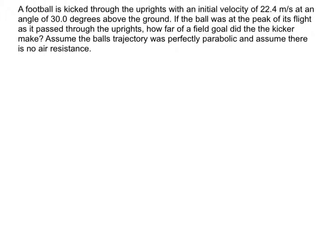A football is kicked through the uprights with an initial velocity of 22.4 meters per second at an angle of 30 degrees above the ground. If the ball was at the peak of its flight as it passed through the uprights, how far of a field goal did the kicker make? We are going to assume the ball's trajectory was perfectly parabolic and assume there is no air resistance.